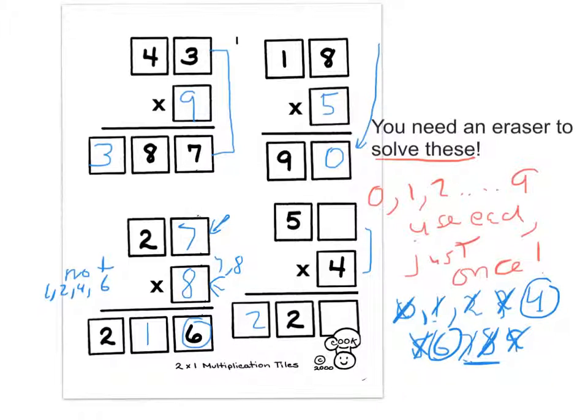That leaves us with our 4 and our 6. Looking at it, we see it has to go this way: 56 times 4.